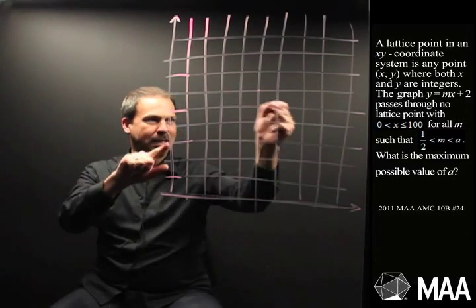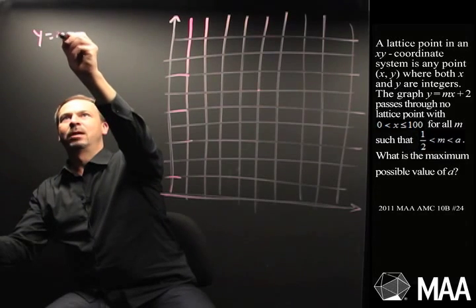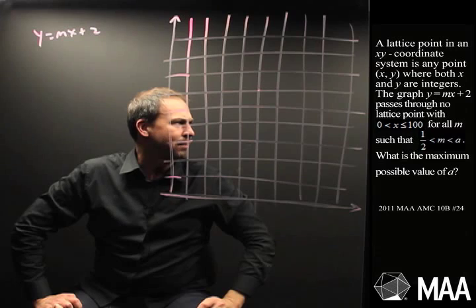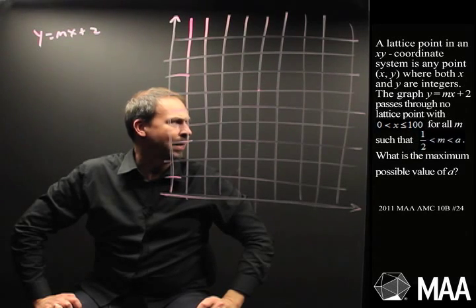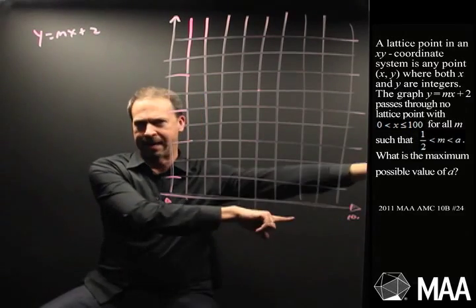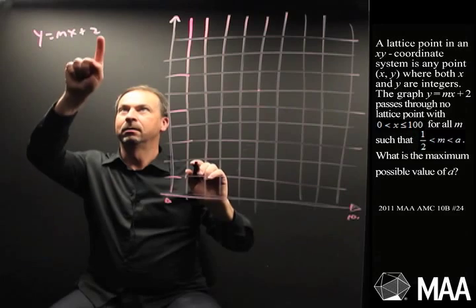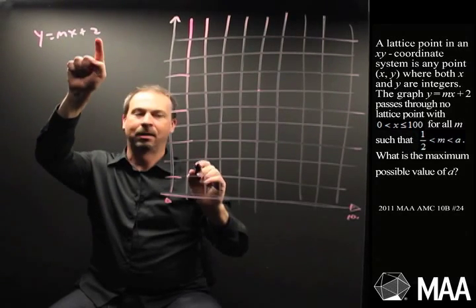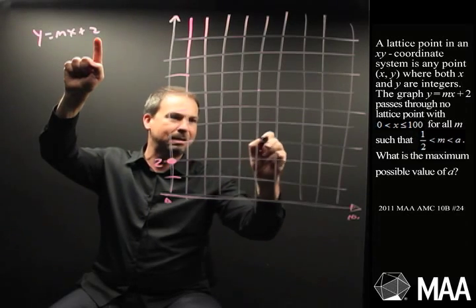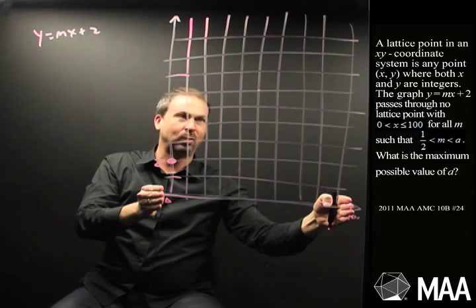So, a lattice point is one of these points. The graph of y equals mx plus 2, y equals mx plus 2 passes through no lattice point for 0, for x between 0 and 100. So, here's 0 and that goes way up to 100, way over there, further than board.